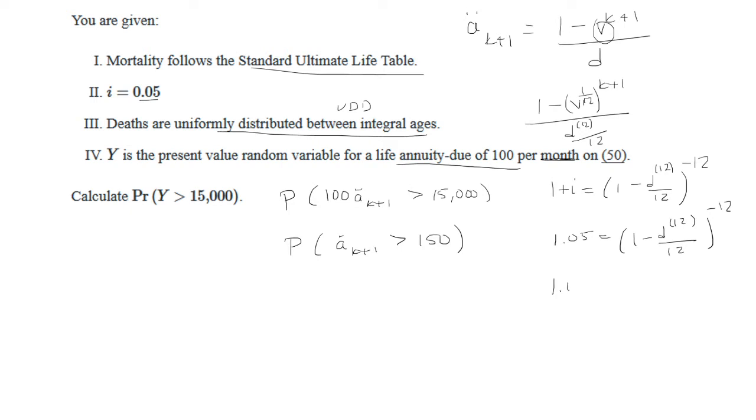So we're gonna raise both sides by negative 1 over 12. So that gives me 1 minus D uppercase 12 divided by 12, and then we're going to do 1 minus both sides.